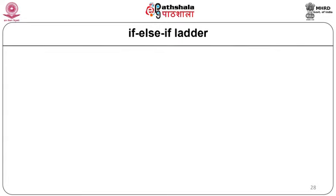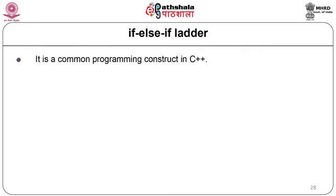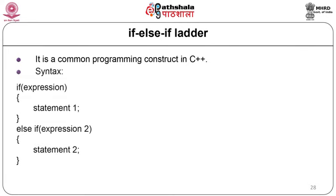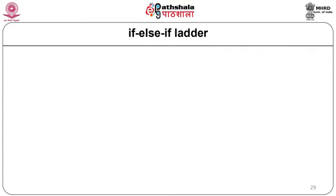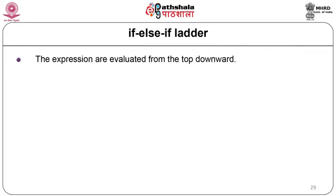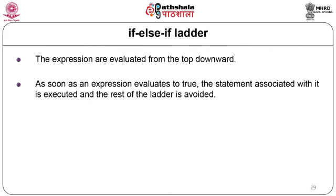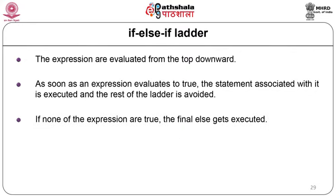The if-else-if ladder is a common programming construct in C++, also called the if-else-if staircase. Syntax: if (expr1) stmt1; else if (expr2) stmt2; else if (expr3) stmt3; else stmt_n. Expressions are evaluated from top to bottom. As soon as one evaluates to true, its associated statement executes and the rest of the ladder is skipped. If none are true, the final else executes.